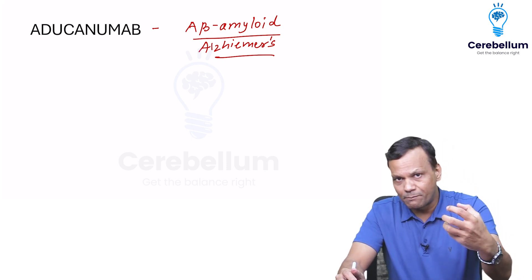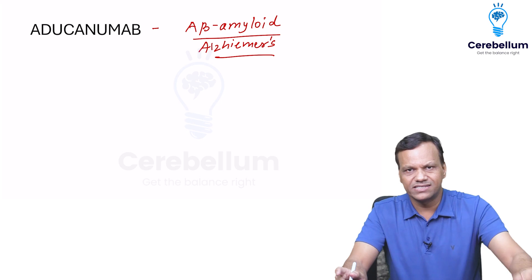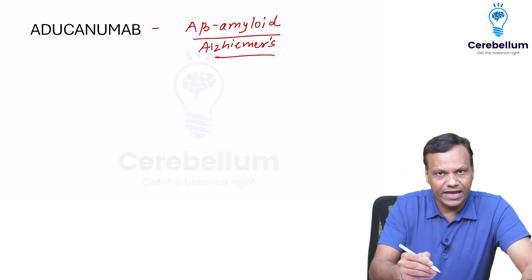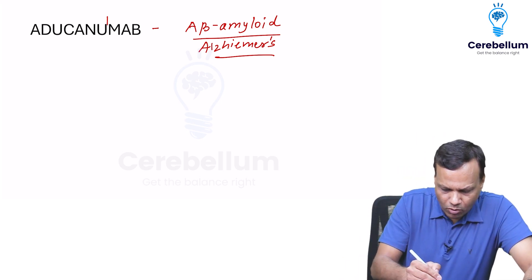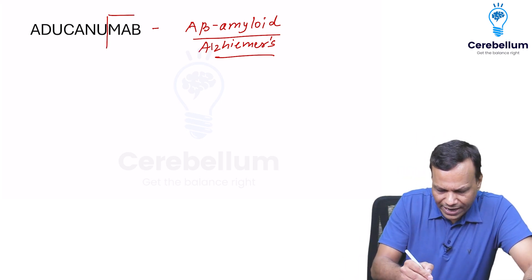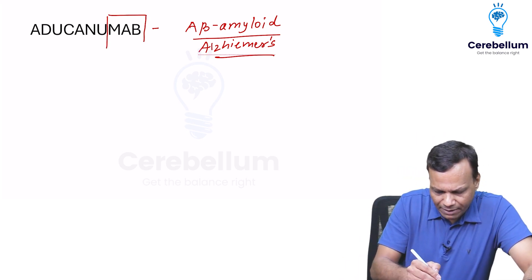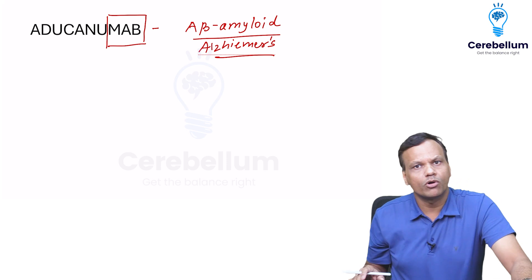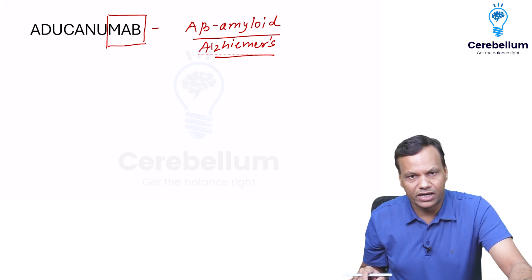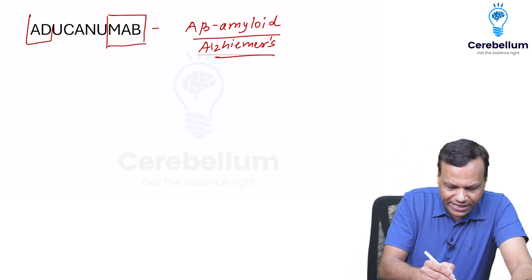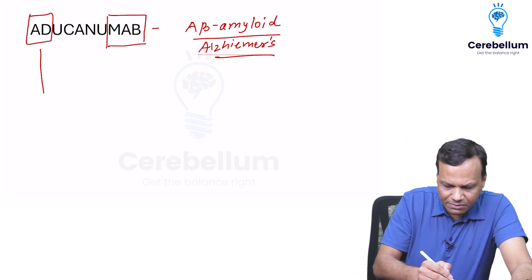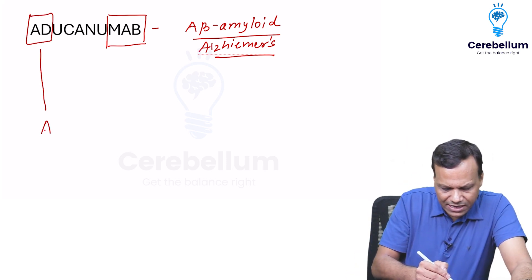So how to remember this? Everything is written in the name. The name says it is a monoclonal antibody — MAb is monoclonal antibody, used for AD, which means Alzheimer's disease.